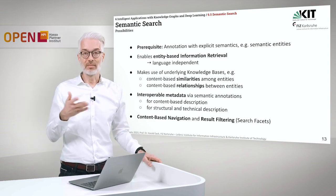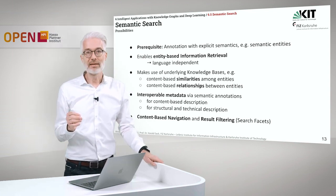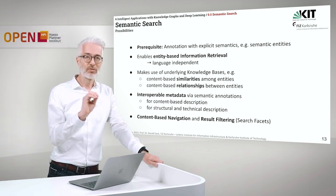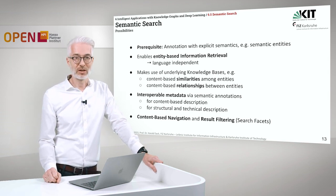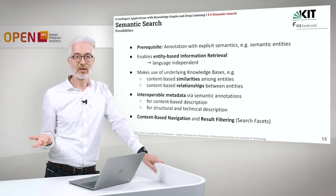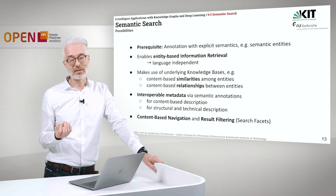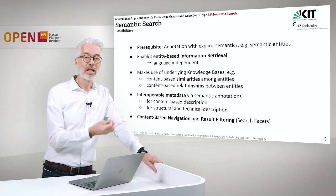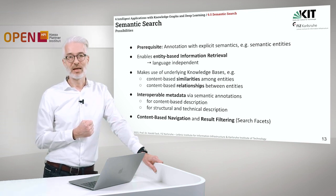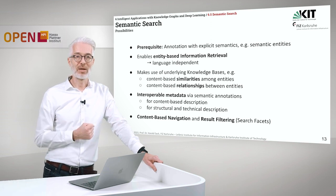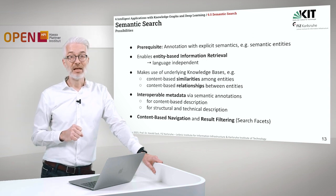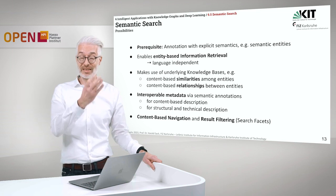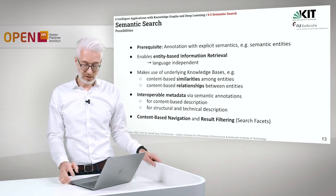We provide users with direct answers sometimes, also in their natural language. And a prerequisite to semantic search always is, of course, the annotation of the text or of the documents with explicit semantics — it means semantic entities have to be put in it. And then we end up with something which is called entity-based information retrieval. Since we are then looking for entities, it might become language independent, which is rather important nowadays also for search engines. And it makes use of underlying knowledge bases or knowledge graphs, which means content-based similarities among entities will be taken into consideration, as well as content-based relationships between entities. This enables interoperable metadata via semantic operations for content-based description and for structural and technical description, and it enables content-based navigation and result filtering — so you could do semantic search facets and then also faceting your search results accordingly.